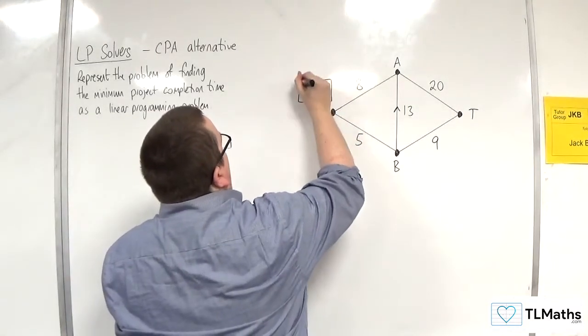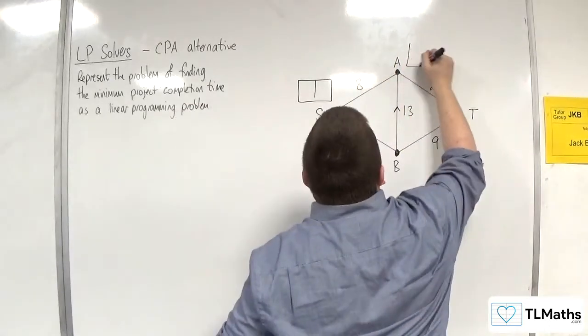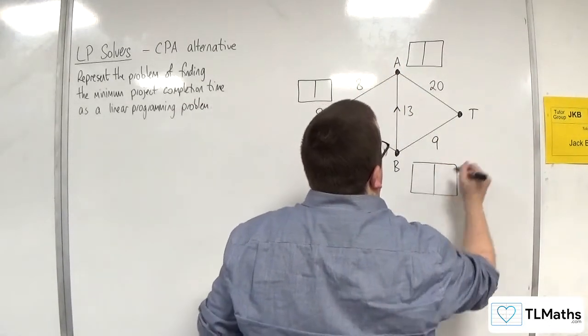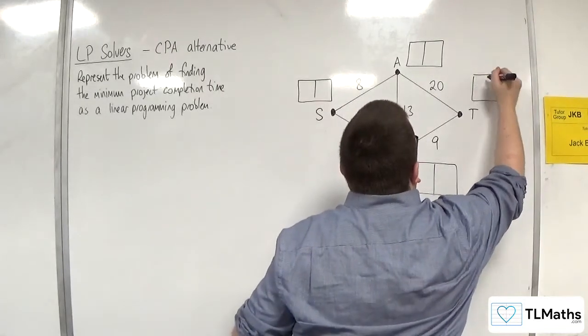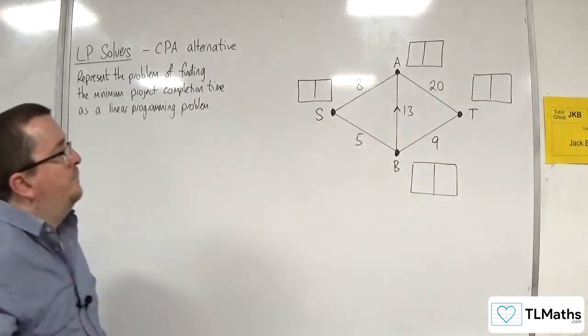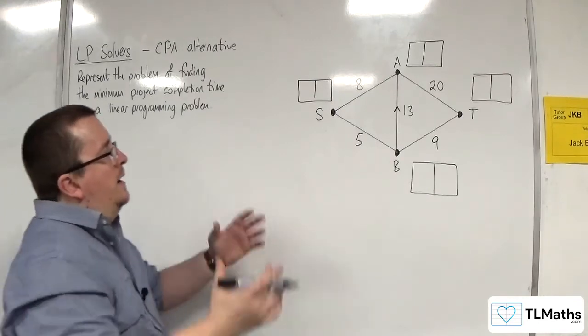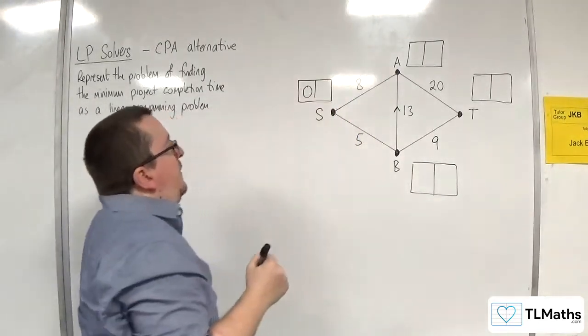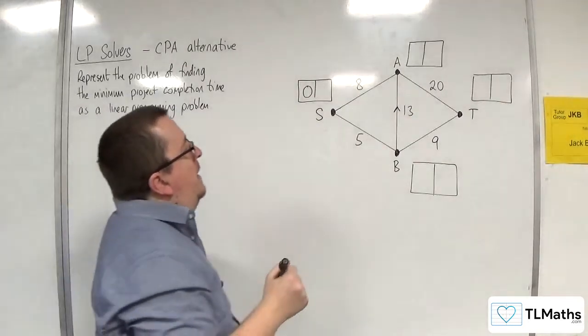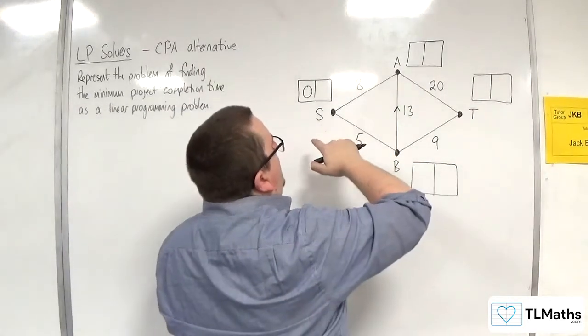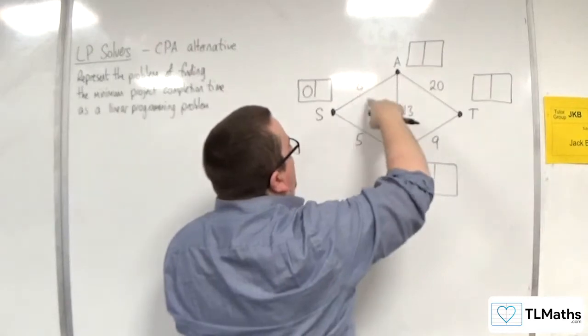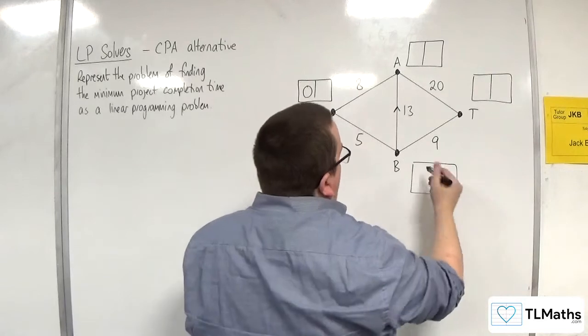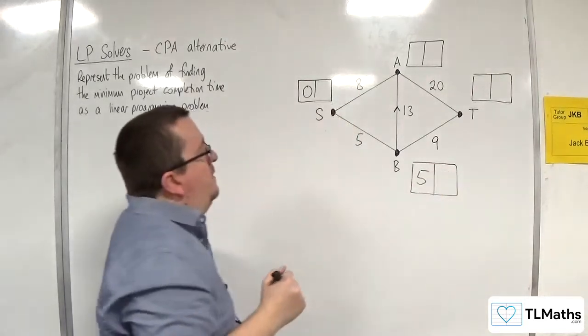I'm going to need a box for each of my vertices. Okay. So earliest event time first for the forward pass. That would be 0. Now, I don't want to consider that one just yet because I've got both the 8 and the 13 going into it. So I'm going to go down here. The earliest completion time there would be 5.